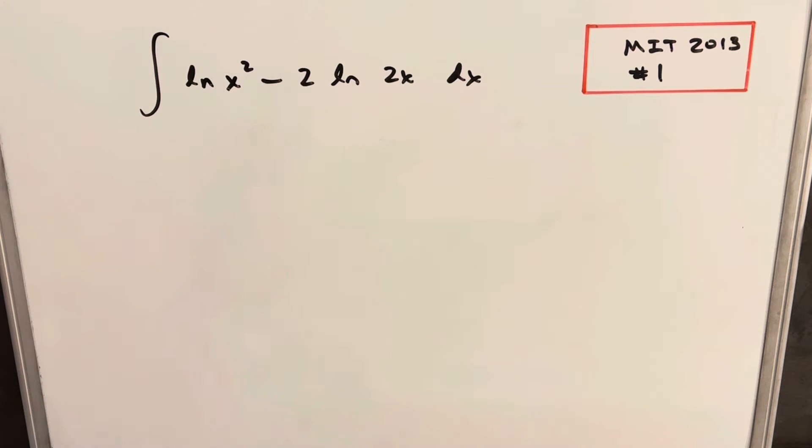I think there's a lot of different ways we could approach this, but what I want to do is just mess with these log functions using log properties.